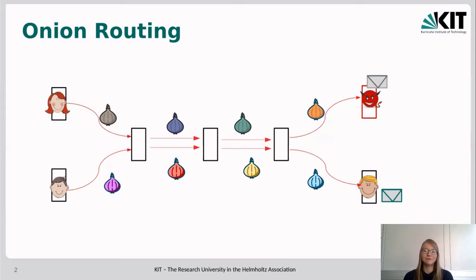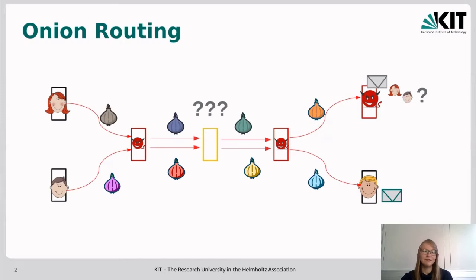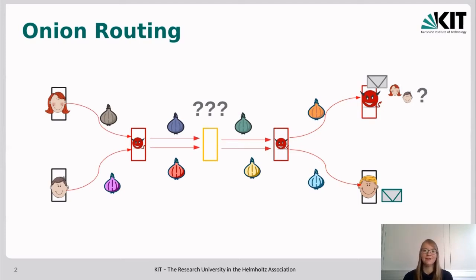If the onion routing scheme is working correctly, then the adversary cannot link onions before the relay to the ones after the relay. This ensures that as long as one of the relays is honest, the adversary does not know which sender was contacting which receiver. In our example, the adversary can observe that Alice is sending the grey onion and can even link it to the blue one because he controls the first relay. But from the blue one, he has no clue whether the next onion is the green or the yellow one once the honest relay finishes processing.